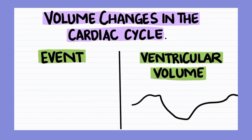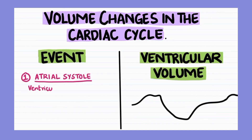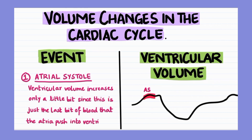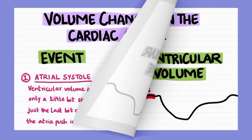Let's start with the first event of the cardiac cycle, that is atrial systole. During atrial systole, the ventricular volume increases as shown by the area highlighted in red on the graph, but it only increases a little bit since this is just the last bit of blood that the atria push into the ventricles.